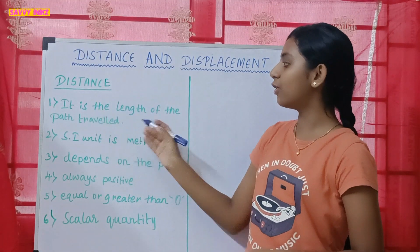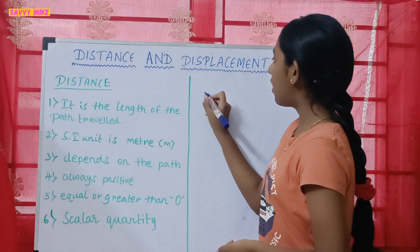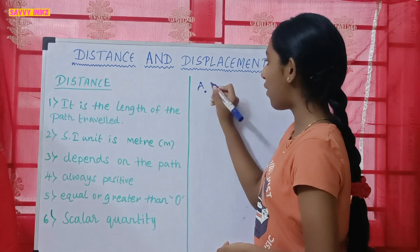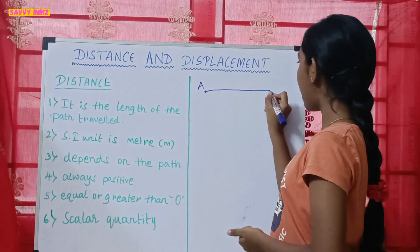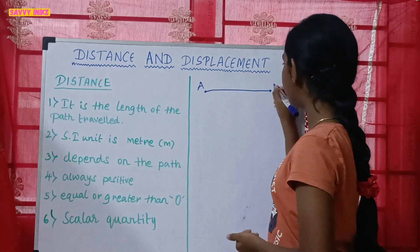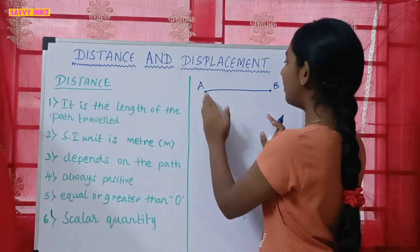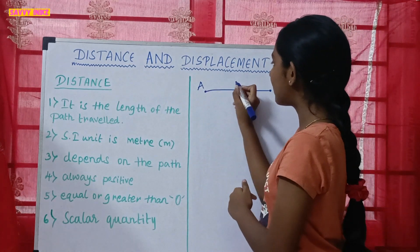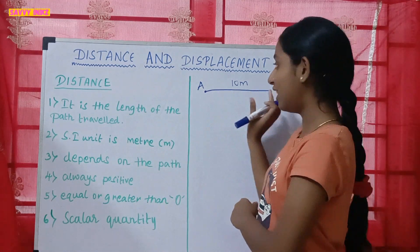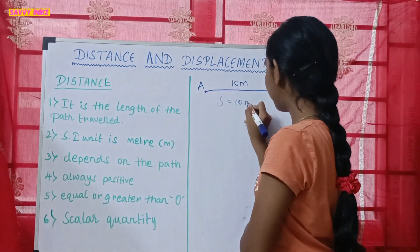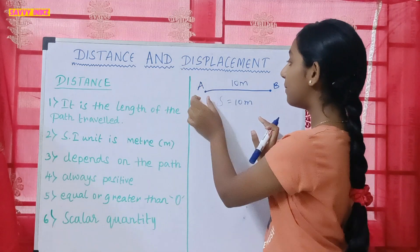First, let us know what is distance. Distance is the length of the path traveled. Let's take an example — say you're at your home, which we'll take as point A, and you're going to your grocery shop, which we'll mark as point B. The length of the path traveled from A to B is 10 meters, so the distance traveled from A to B is 10 meters.